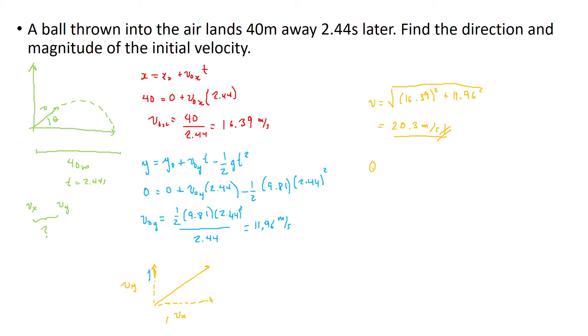And the angle is the arctan of the y component, that is 11.96 over 16.39, and that is 36.1 degrees. So check this out, this time I finished with the displacement in x and the time, and I can basically do all the procedure the way all the way around. So I can get the magnitude and the angle.